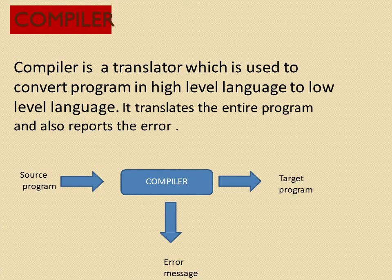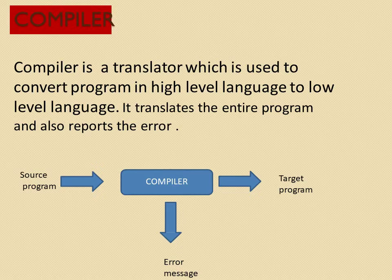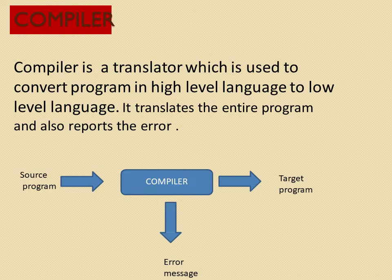Now we will see what a compiler is. It is used to convert the high level language to the low level language. It translates the entire program, and if it encounters any error it will send an error message to the user. The user will correct the error, and after that they will compile the high level language again, and finally that language is converted into low level language. This is the main process of the compiler.